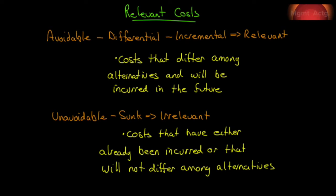We're beginning Chapter 12, and Chapter 12 is about relevant costs for decision-making. Up front, let me say that there's nothing new in Chapter 12 that you don't already know how to do.